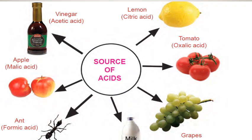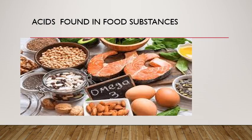Here you will find some of the sources of acids present in mainly fruits. Apple contains malic acid, which is an organic acid. Vinegar contains acetic acid, also an organic acid. Lemon contains citric acid. Tomato contains oxalic acid. Grapes contain another organic acid.